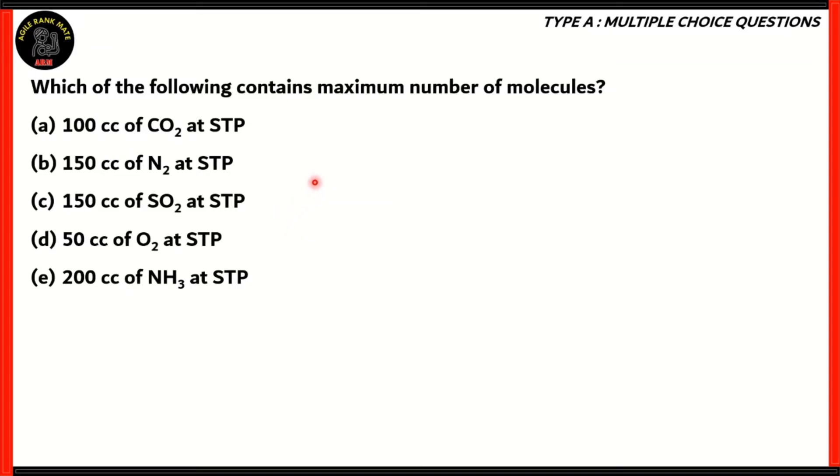Let's begin with our first question. Which of the following contains maximum number of molecules? (a) 100 cc of CO2, (b) 150 cc of N2, (c) 150 cc of SO2, (d) 50 cc of O2, (e) 200 cc of NH3 at standard temperature and pressure. How do we solve this question? We need to find out how to convert volume, which here is in cubic centimeters, into molecules.